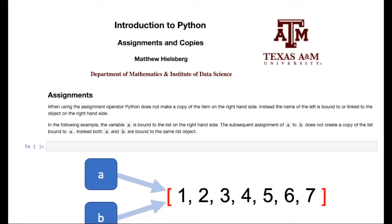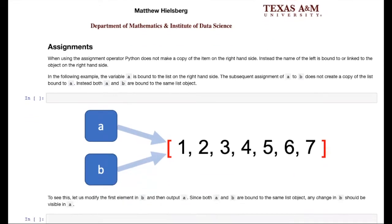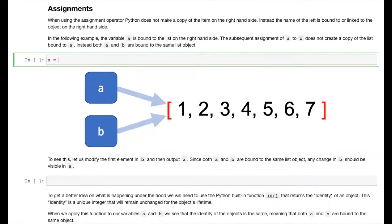We've already seen basic assignment operations in previous notebooks, but now we're going to take a closer look at what happens when we actually make an assignment. So we'll start with a list A, and like an image here, we're going to give it the values 1 through 7. Now we know that the right-hand side is going to create a list object containing these seven elements, and the assignment operator is going to bind the name on the left to the object created on the right.